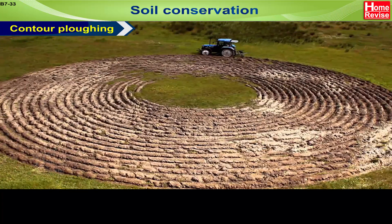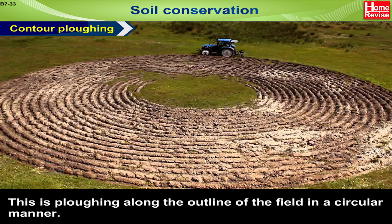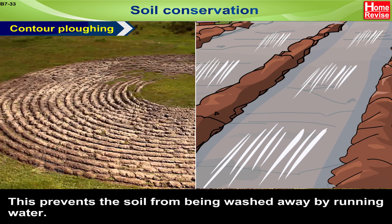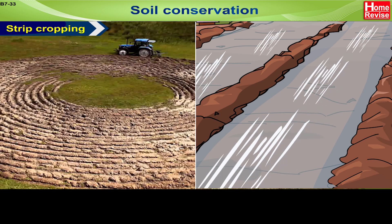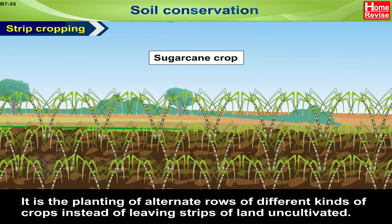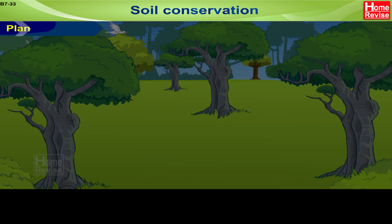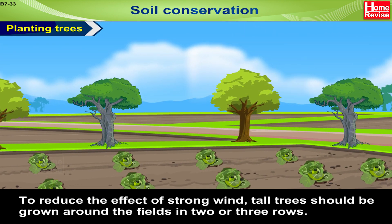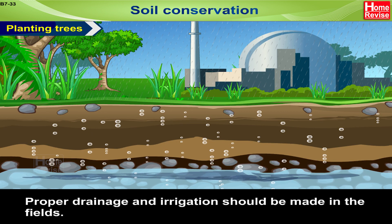Contour Ploughing: this is ploughing along the outline of the field in a circular manner. This prevents the soil from being washed away by running water. Strip Cropping: it is the planting of alternate rows of different kinds of crops instead of leaving strips of land uncultivated. To reduce the effect of strong wind, tall trees should be grown around the fields in two or three rows.